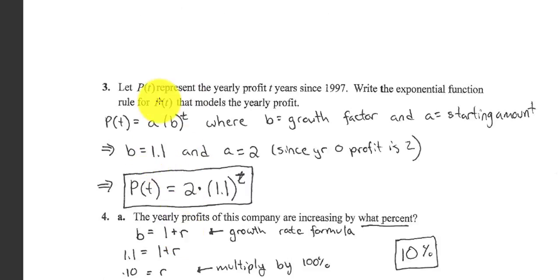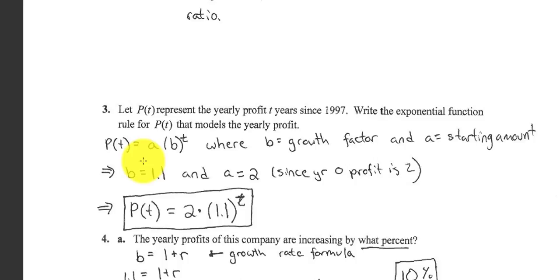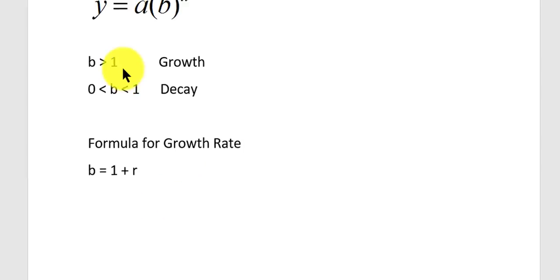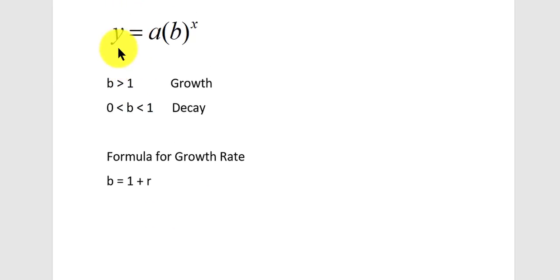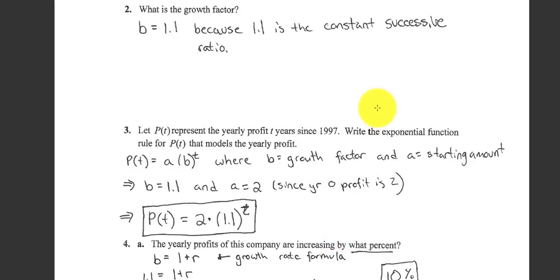Next, it says let P of T represent the yearly property, T, since 1997. So remember, our function is really Y equals AB to the X, but now they're replacing the Y with P and X with T. This is the function for exponential growth, but they replaced Y with P and X with T. Okay, so we already know the B in Y equals AB to the X, or P equals AB to the T. The B was 1.1.